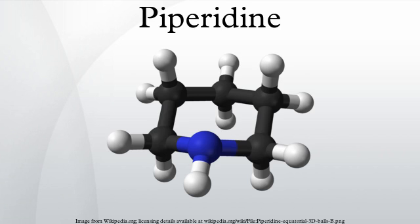Piperidine is an organic compound with the molecular formula C5H11N. This heterocyclic compound consists of a six-membered ring containing five methylene bridges (CH2) and one nitrogen bridge.